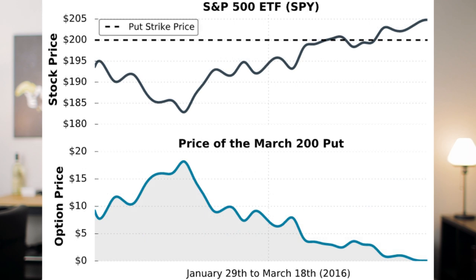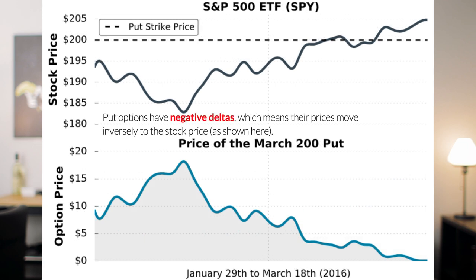On the other hand, put options gain value as the stock price falls and lose value as the stock price increases. In this illustration, we can see the opposite relationship between the put price and the stock price — the put gains value when the stock price falls and loses value when the stock price increases. But keep in mind that the option price is not changing by the same magnitude as the change in the stock price, and that's exactly what the put's Delta is going to tell us. Options with larger Delta values will experience larger price changes relative to the same stock price movement as compared to options with smaller Delta values.